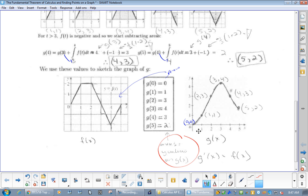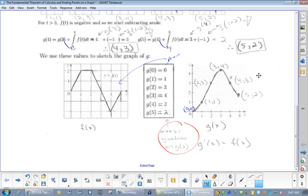So, now I plot these points. 0, 0, 1, 1, 2, 3, 3, 4, 4, 3, and 5, 2. And now, you see this is the original graph. So, when I take the antiderivative, I get the areas. The areas turn into the y values.